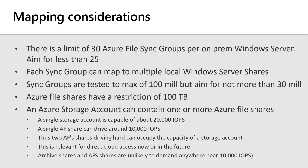As you define your share mapping, there are a number of considerations and best practices to keep in mind. There is a limit of 30 Azure File Sync groups per on-prem Windows Server; aim for less than 25 to allow for growth. Sync groups are tested up to 100 million items, but aim for not more than 30 million. Azure file shares have a restriction of 100 terabytes. An Azure storage account can contain one or more Azure file shares, but note a single storage account is capable of about 20,000 IOPS, and a single Azure file share can drive around 10,000 IOPS. So two Azure file shares driving hard can occupy the capacity of a storage account. This is relevant for hot shares using direct cloud access, but archive shares and Azure file shares accessed through Azure File Sync, which frontends most of the load, are unlikely to demand anywhere near 10,000 IOPS, and so several shares per storage account can be used.